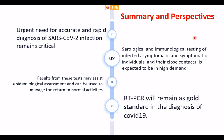To conclude, we still need many accurate and rapid diagnostic kits for the detection of SARS-CoV-2 infection. At present, RT-PCR remains the gold standard in the diagnosis of COVID-19, with many improvisations made in this technique and new kits being developed. ICMR is periodically validating and updating kits that can be used for the diagnosis of COVID-19.